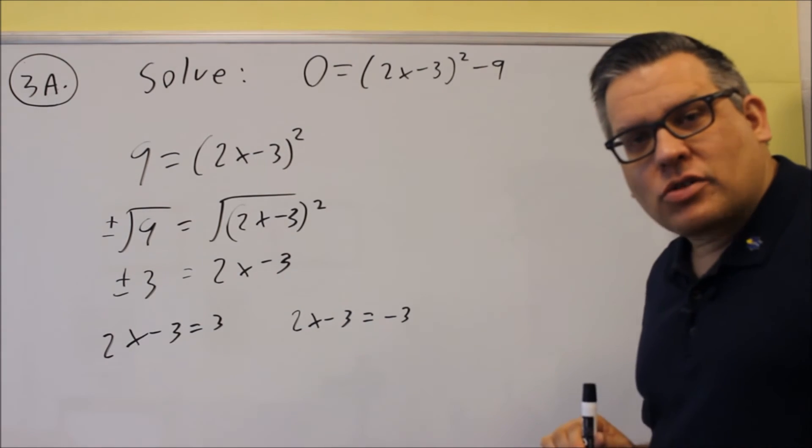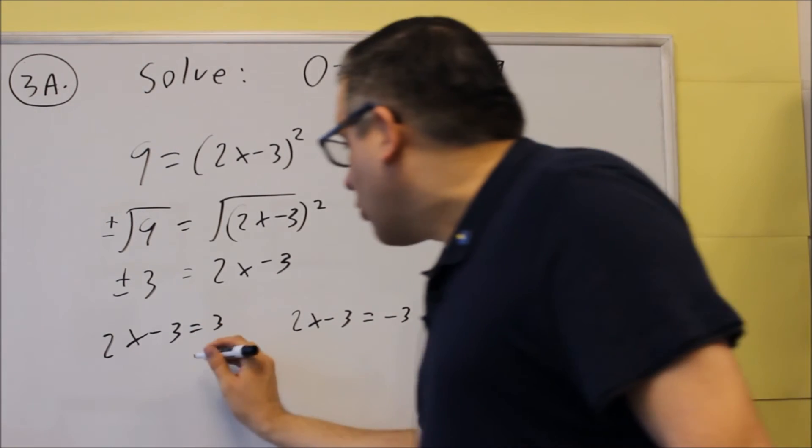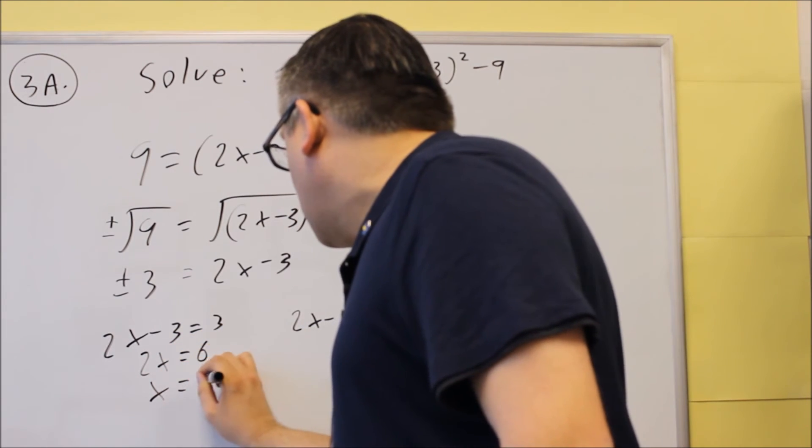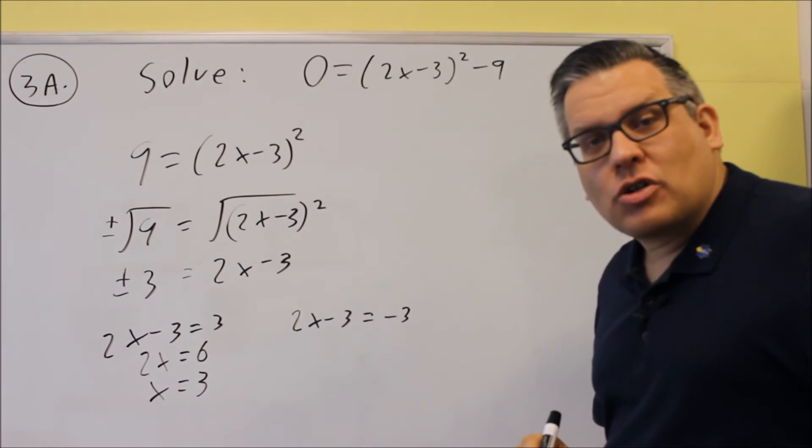If we add 3 to both sides, 2x is going to equal 6. So we get x equals 3 as one of our answers.